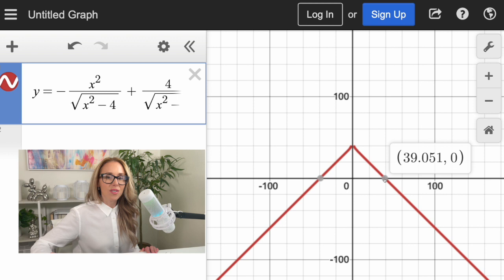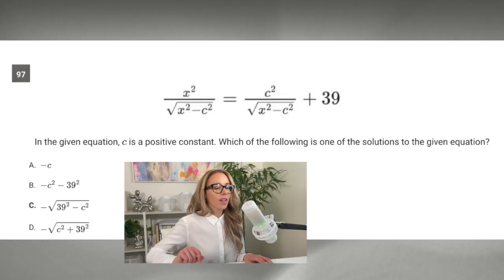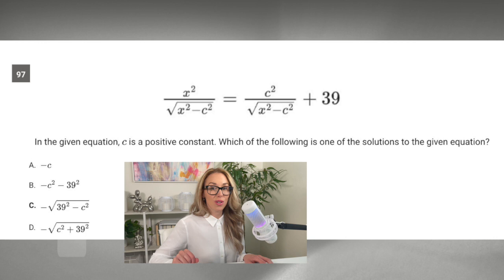What I'm going to do now is take the same number I used for C, which was 2, and put it into all the answer choices until I get negative 39.051 or positive 39.051. I'm going to skip A because A would just be negative 2 and we're looking for 39.051. The next one, B, also wouldn't make sense because we'd have a really big negative number.